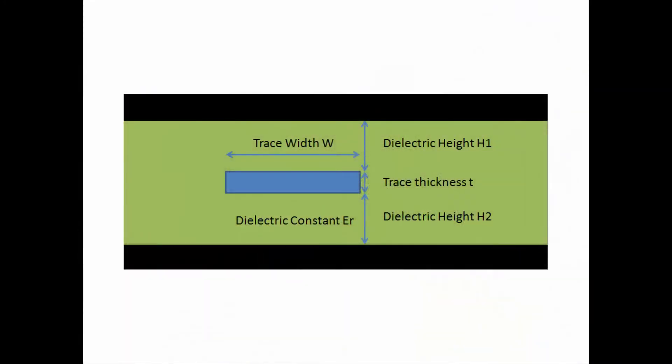What we're really going to talk about here today is your standard microstrip trace that has a solder mask covering over it. When we compare that to a stripline, a stripline is sometimes called an interlayer trace because it's buried inside between two layers. When you look at a stripline, you're going to have a dielectric material above it and then your reference plane, and then a dielectric material below it and a reference plane.